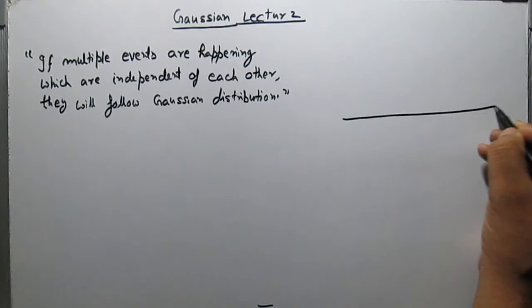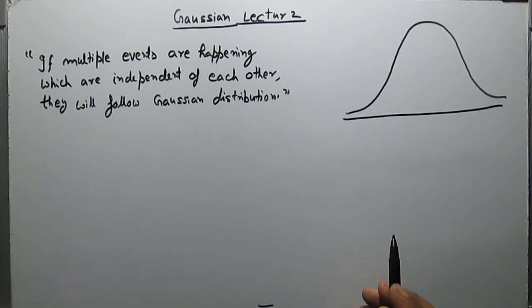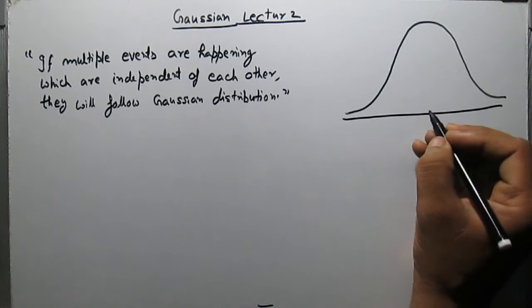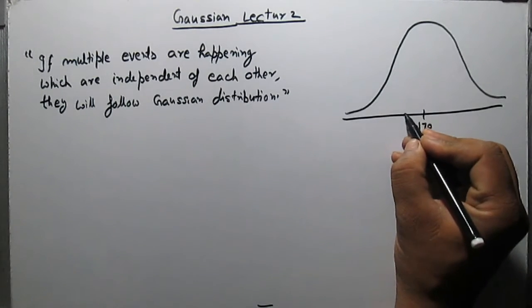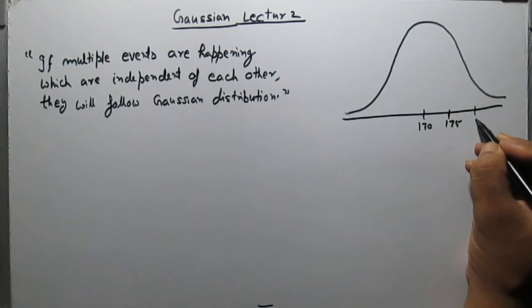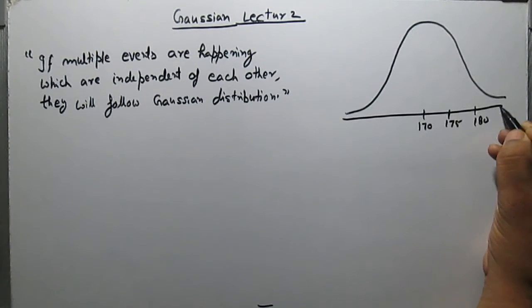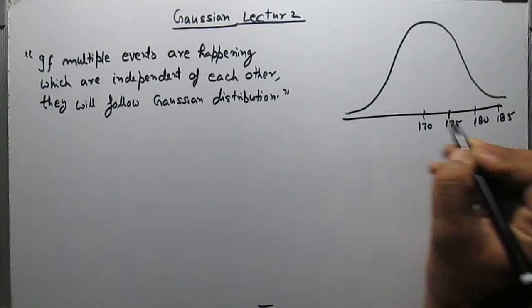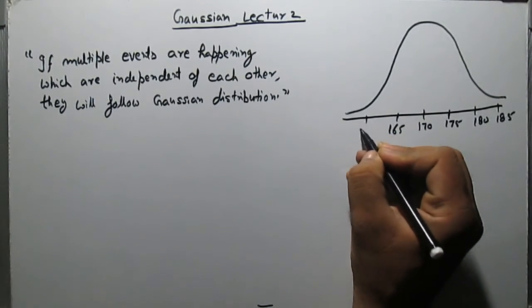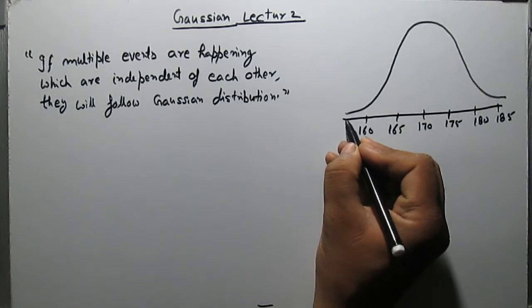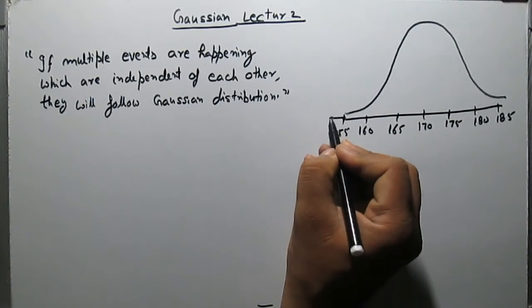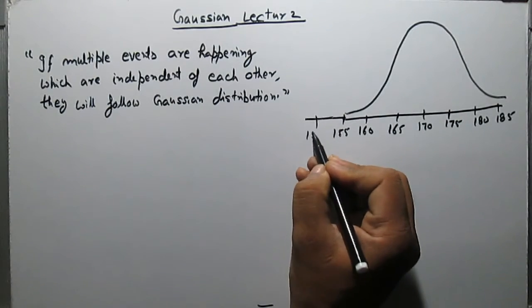Suppose there is a curve. Suppose this curve represents heights of some students. The mean of height is 170, 175, 180, 185, 165, 160, 155 and so on.